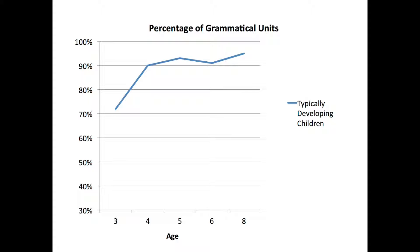At age four, that average goes to ninety percent, and it stays in the nineties until around age eight. So we have ninety percent at age four, ninety-three percent at age five, around ninety percent at age six, and around ninety-five percent at age eight.